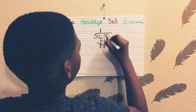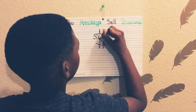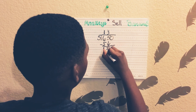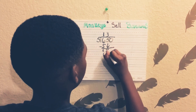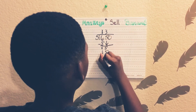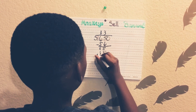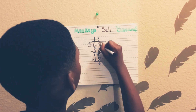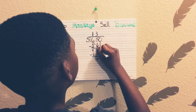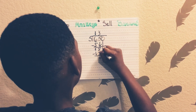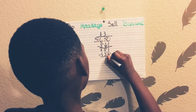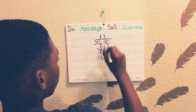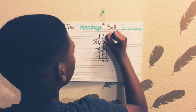So 5 goes into 15 three times. 3 times 5 equals 15. 15 minus 15 equals 0. Then bring it down to 0. 5 times 0 equals 0.